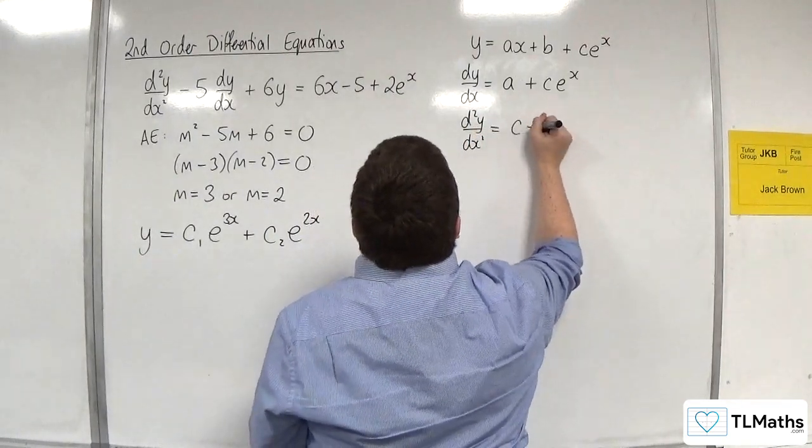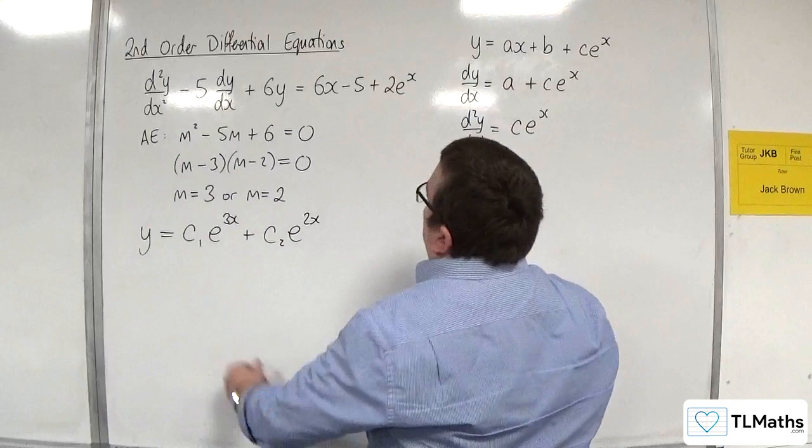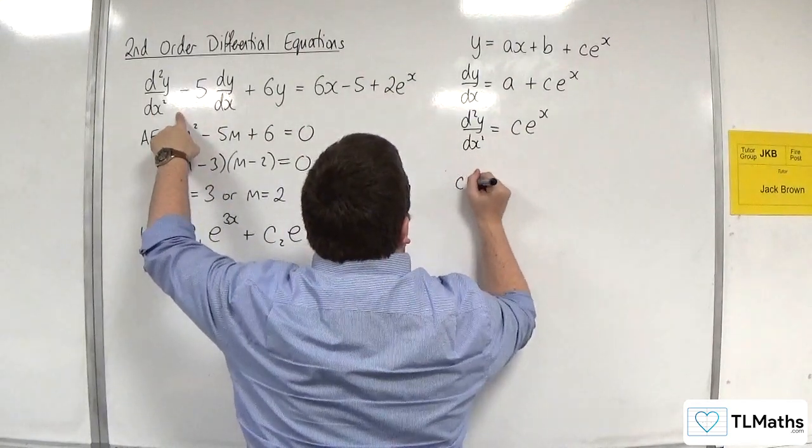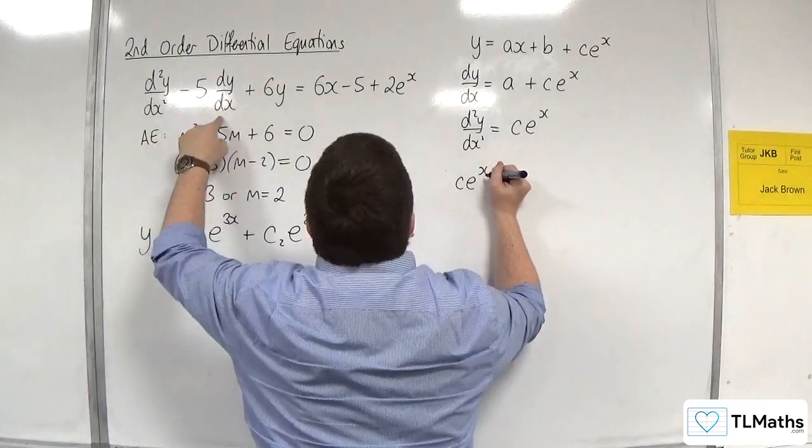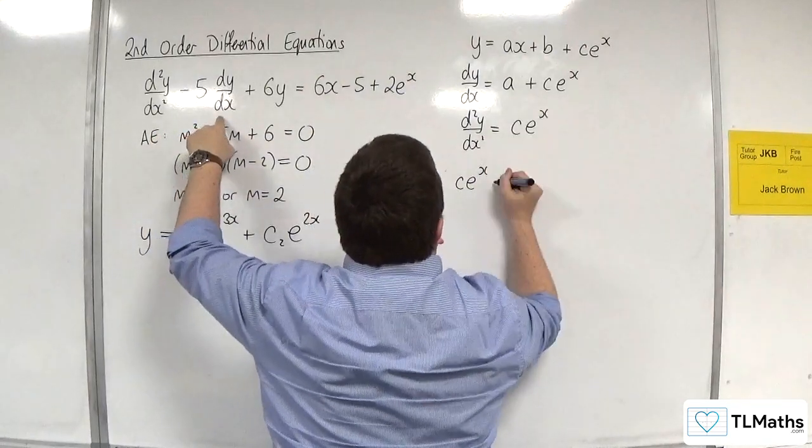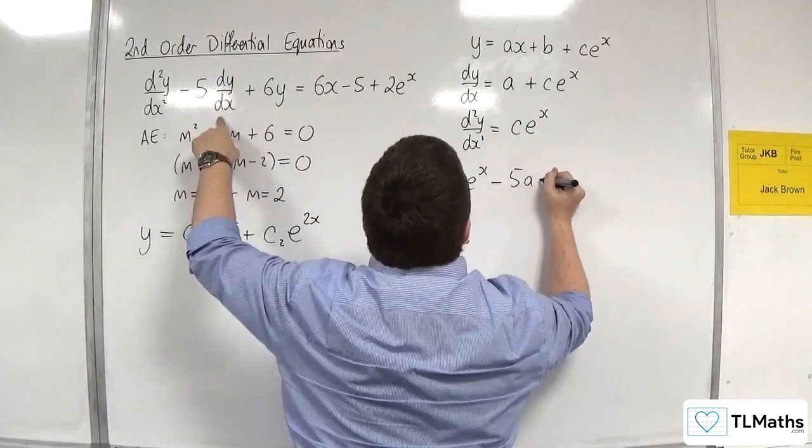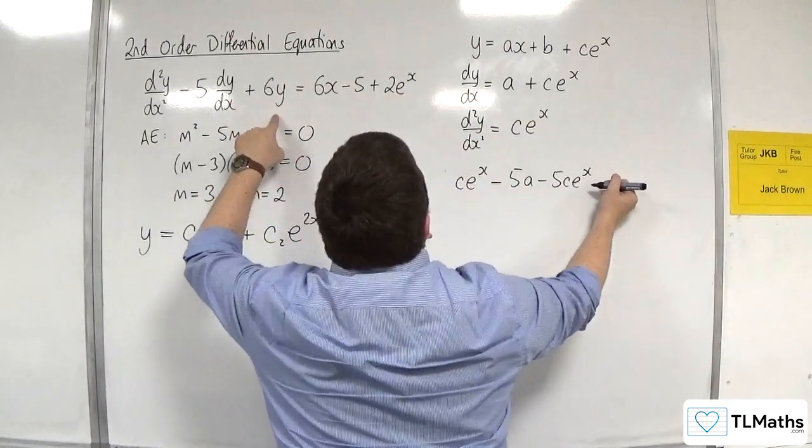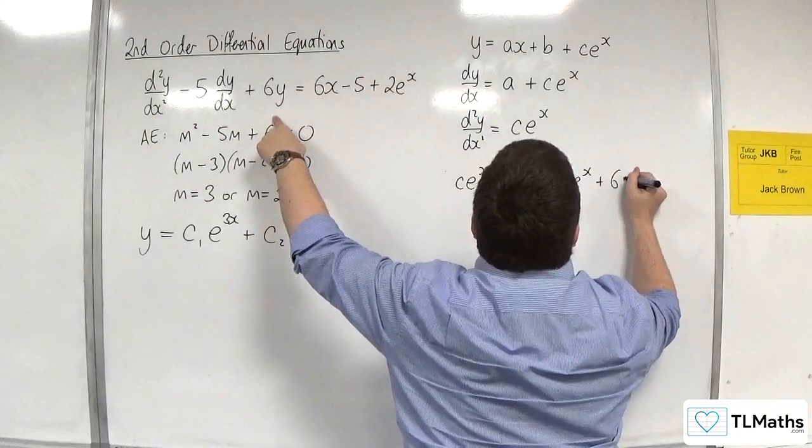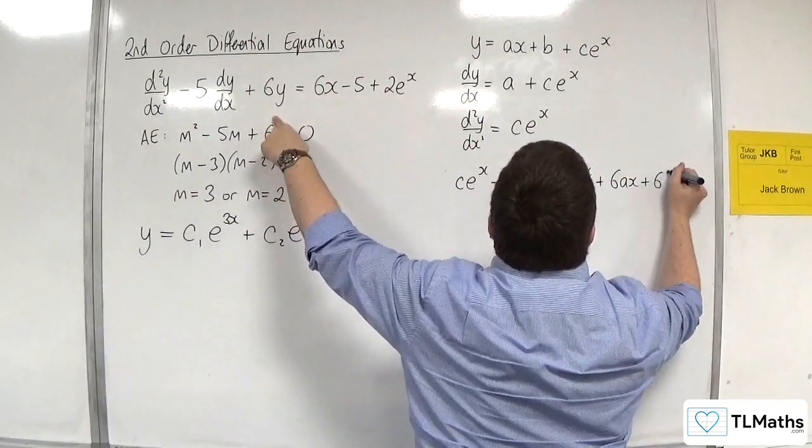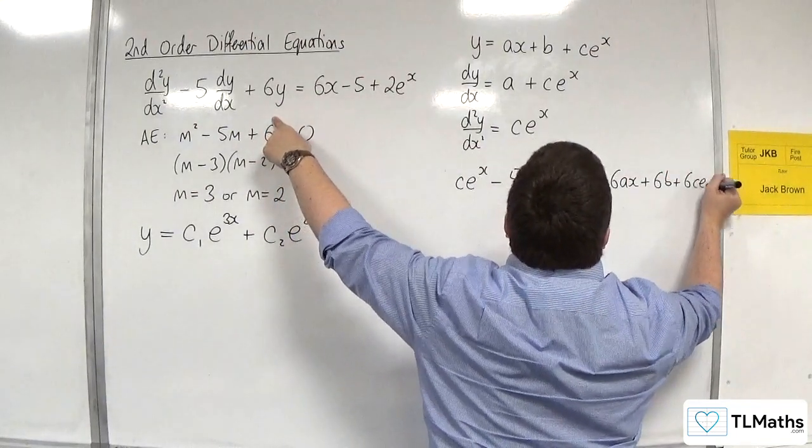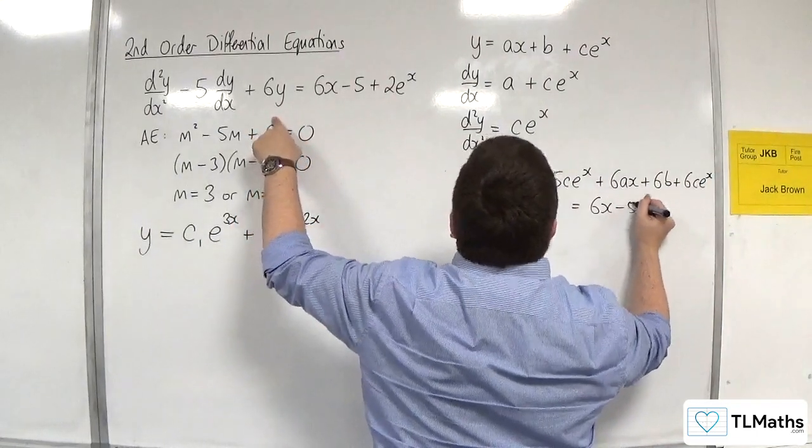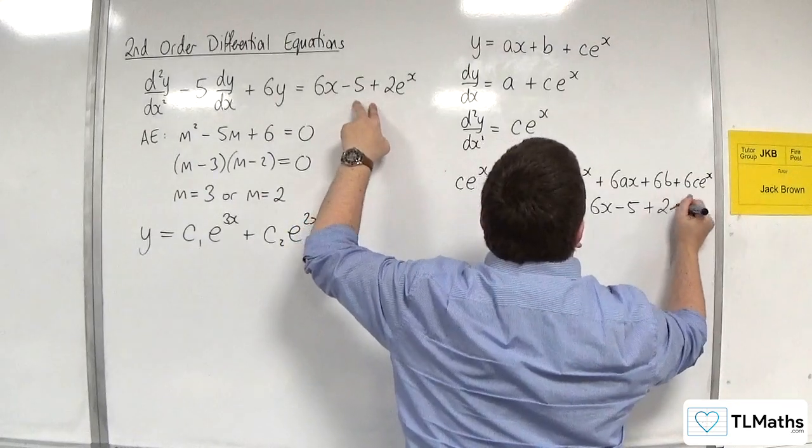So now substituting in, the second derivative is ce to the x, take away 5 lots of dy by dx, so take away 5a, take away 5ce to the x, plus 6 lots of y, so plus 6ax plus 6b plus 6ce to the x. And that's got to be equal to 6x take away 5 plus 2e to the x.